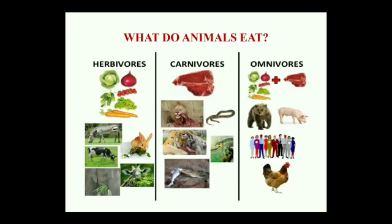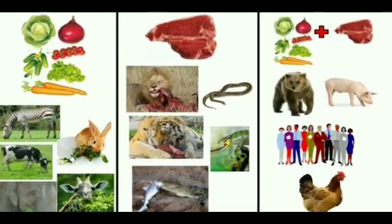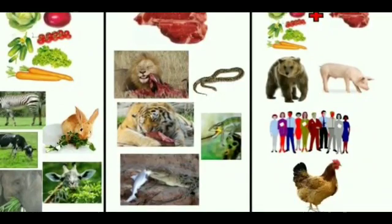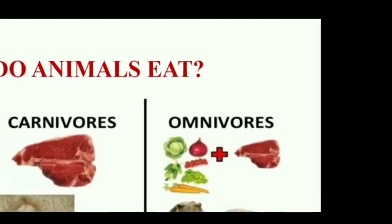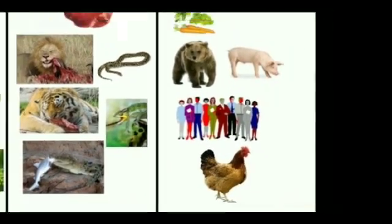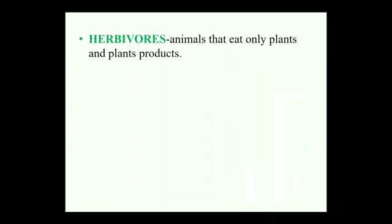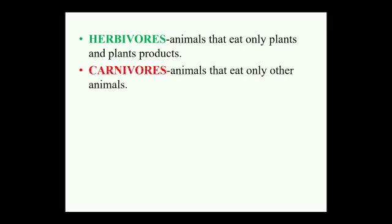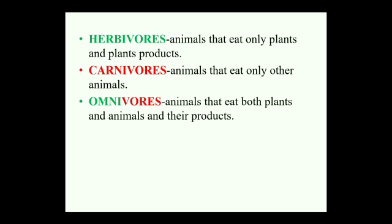Finally, the last question that comes in my mind is: what are different animals who eat different foods called? The first kind of animal which eats only plants and plant products are called herbivores. The second kind of animals that eat only meat or other animals are called carnivores. And the last kind of animals which can eat both plants and animal sources are called omnivores. Herbivores: animals that eat only plants and plant products. Carnivores: animals that eat only other animals. Omnivores: animals that eat both plants and animals and their products.